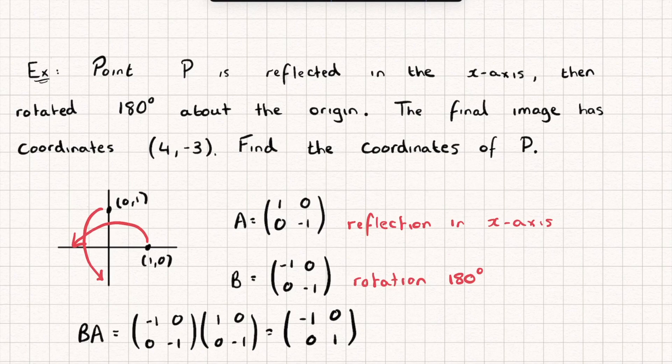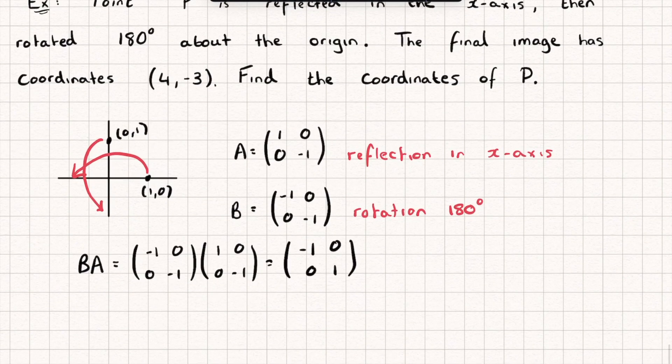So that will do both transformations in one go and what we're going to do is we're going to multiply that point P by the overall transformation matrix. So that's transformation A followed by transformation B. So we'll multiply that by P and we get a new point which is 4, negative 3 like so.